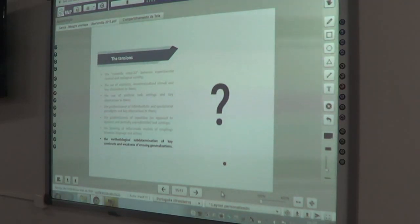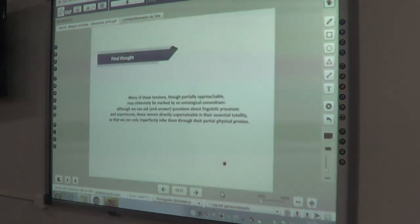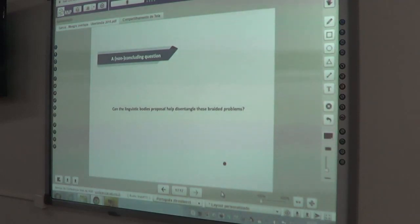There is another question, or perhaps a variation of the one question that I have for the authors. So many of these tensions, and this is my final thought here, though partially approachable, may ultimately be marked by an ontological conundrum. Although we can ask and answer questions about linguistic processes and experiences, about linguistic bodies even, those processes, those experiences in their unicity, in their actual manifestation in the moment, if you will, remain directly unperceivable in their essential totality, so that we can only imperfectly infer them through their partial physical correlates.